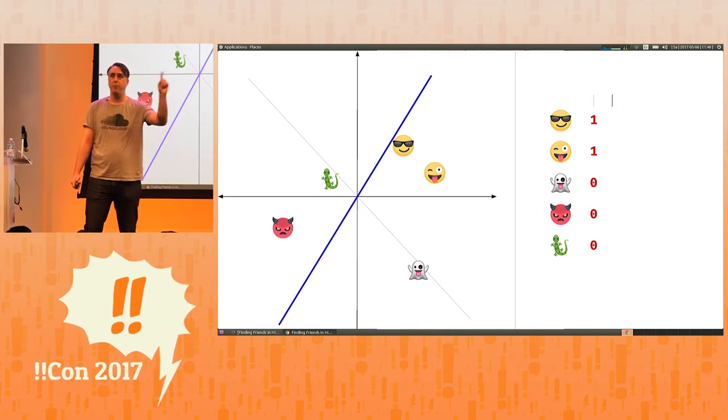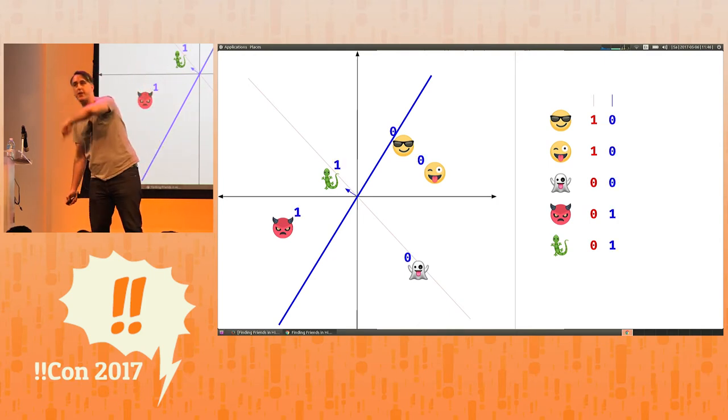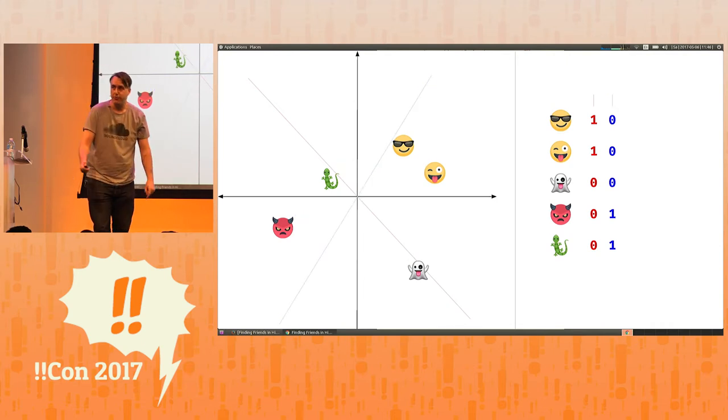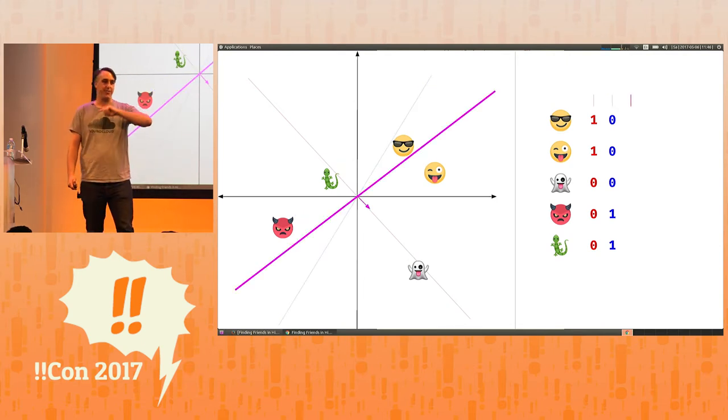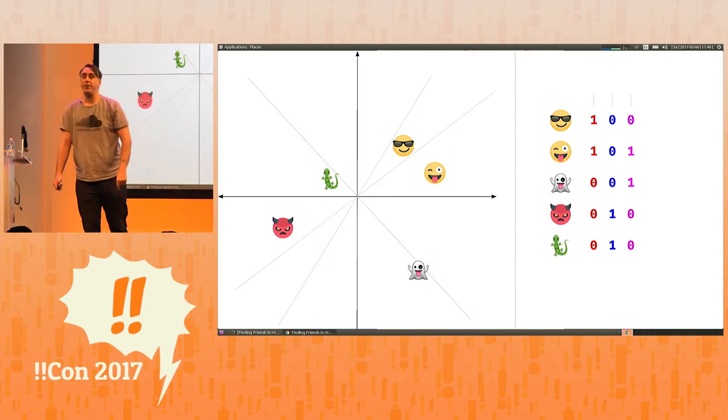Pick a random line that passes through the origin. Pick an orientation. Assign the vectors on one side of the plane a one and vectors on the other side of the plane a zero. Pick an orientation, assign vectors on one side of the plane a one and vectors on the other side of the plane a zero. And don't stop.